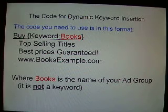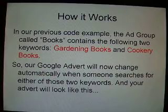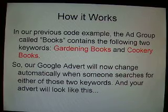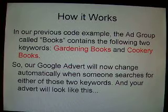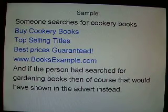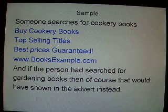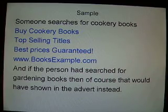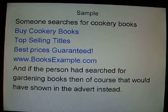Looking at the next page: in the previous code example, the ad group called 'books' contains two keywords — for example, 'gardening books' and 'cookery books'. So our Google advert will now change automatically when someone searches for either of those two keywords, and your advert will then look like this. If someone searches for 'cookery books', the actual advert will say 'buy cookery books — top selling titles, best prices guaranteed'. And if somebody searched for 'gardening books', that would show in the advert instead of cookery books.